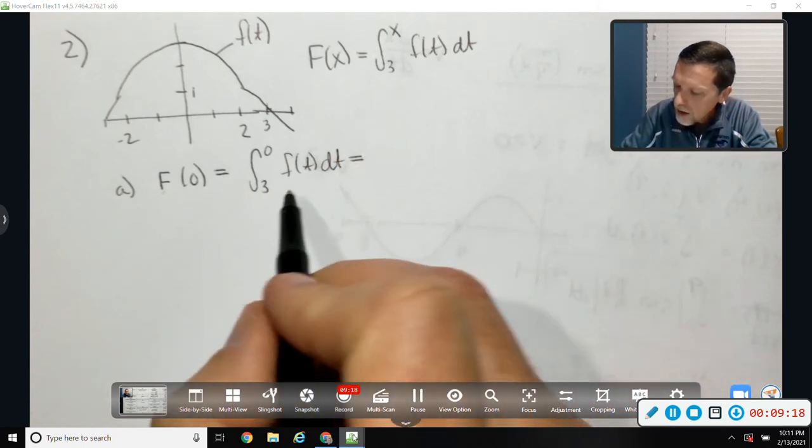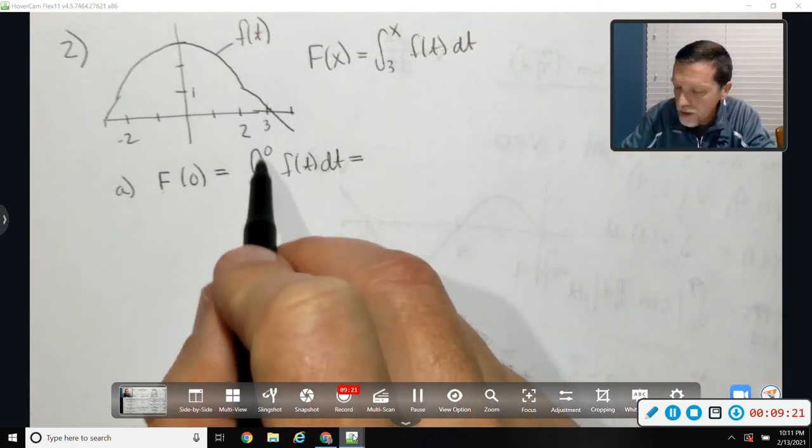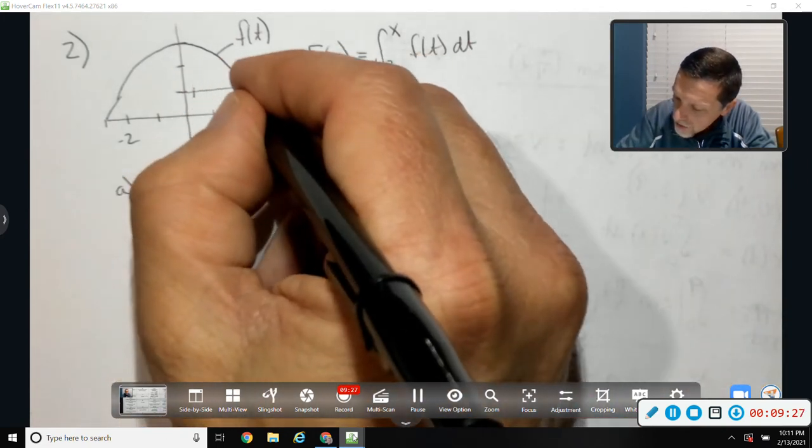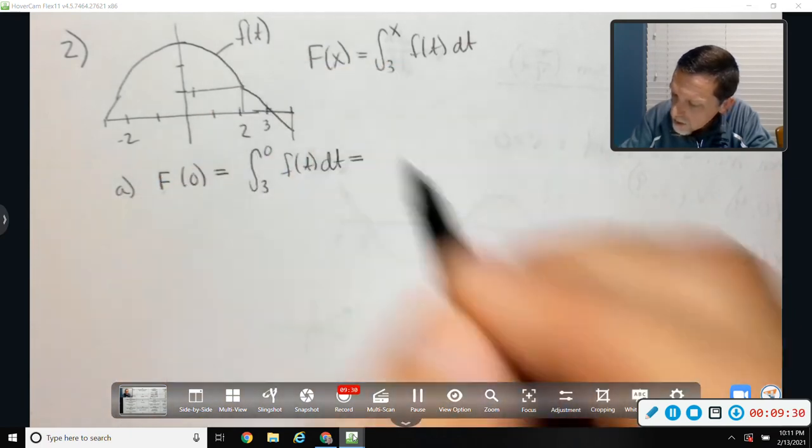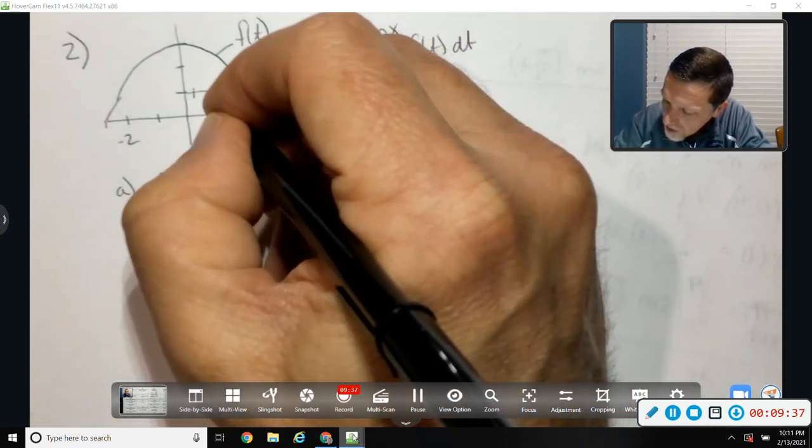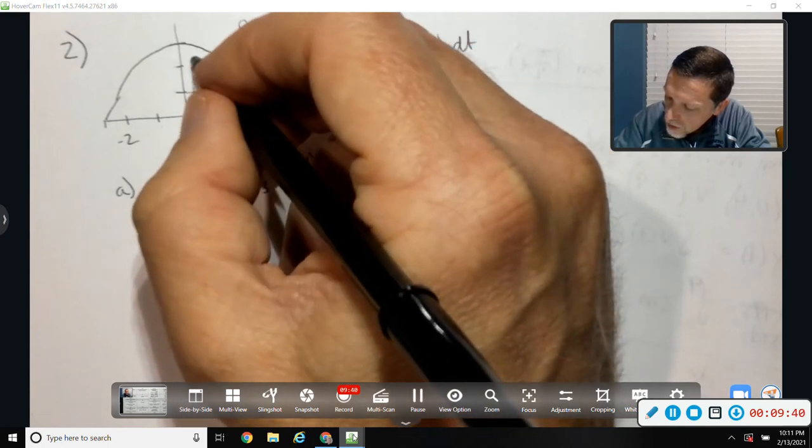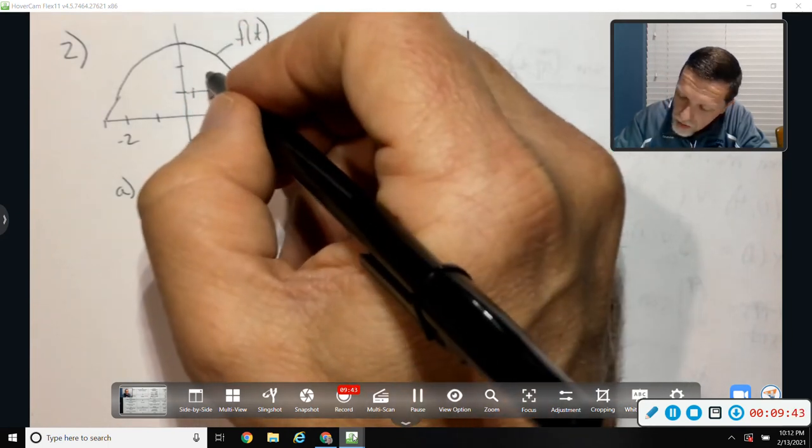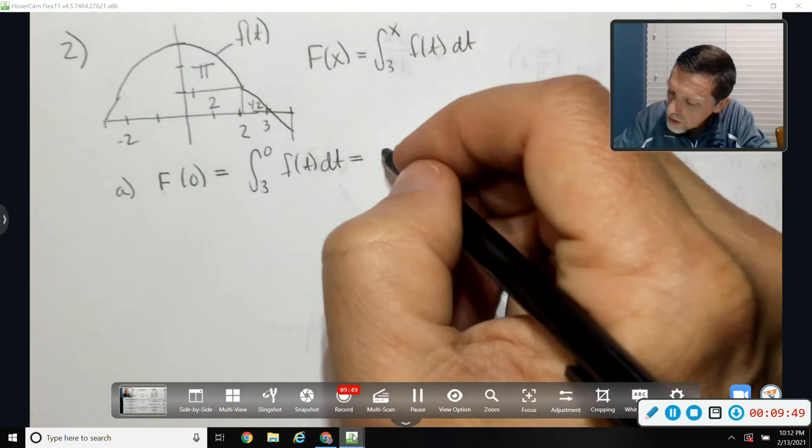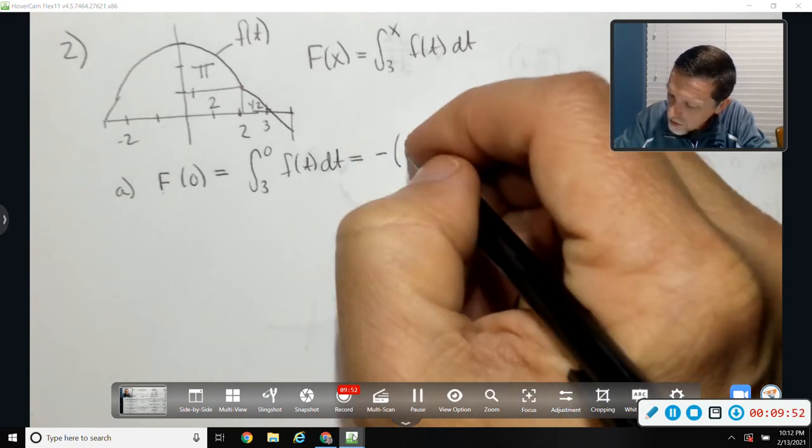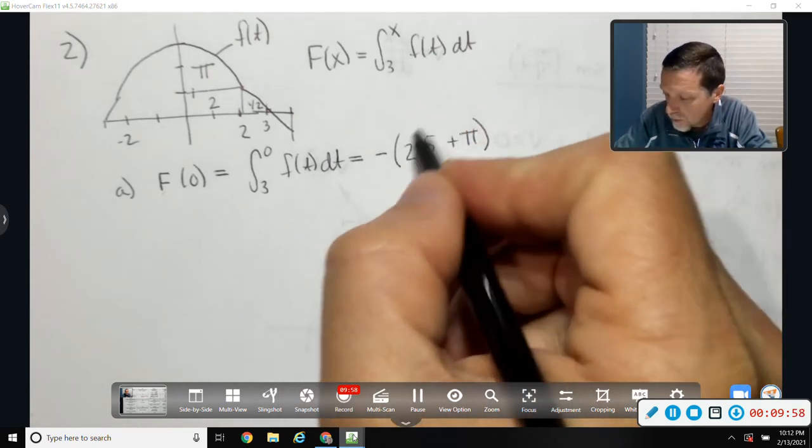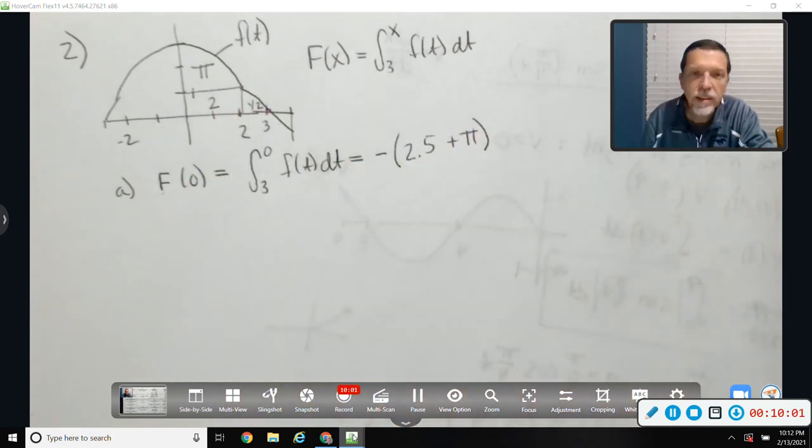Find part A. Find F of zero. Capital F of zero. Well, I'm just looking at this. This would mean the integral from three to zero of f of t dt. This is where some of you are going to switch those because you don't like it. Others of you will just go backwards and fix its negative. Either way is fine.